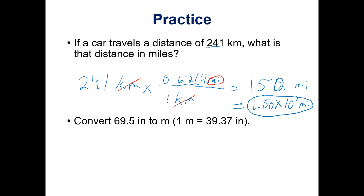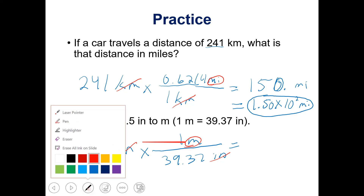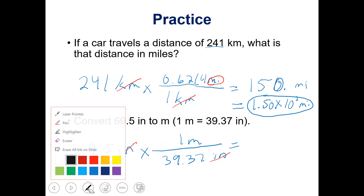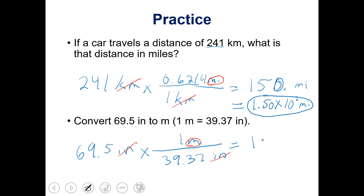Let's take a look at another example — we want to convert 69.5 inches into meters. We start with 69.5 inches. We have inches to start with so we put inches on the bottom of the next step and meters on top, because we want to get rid of inches and have meters left over. If you put this into your calculator — 69.5 divided by 39.37 — and round to three significant figures, you should come up with 1.77 meters.